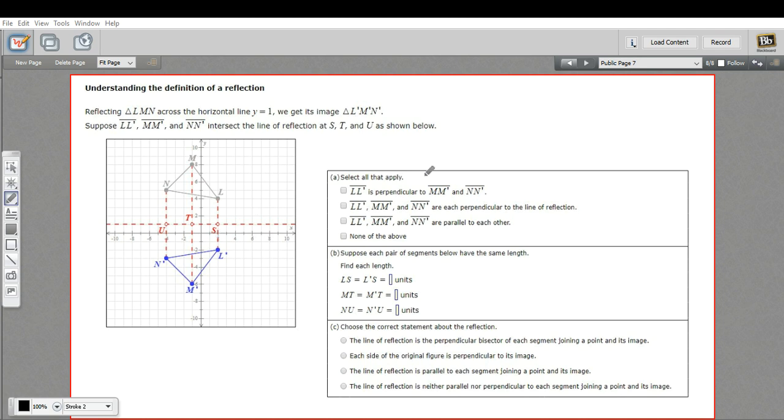Part A says select all that apply. Segment LL' (that would be this one right here) is perpendicular to MM' and NN'. So those are all the segments that join the point and its reflection. Well, they're all actually parallel to each other, so that one's not true.